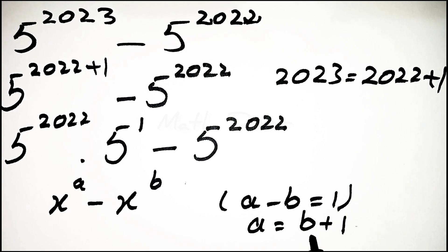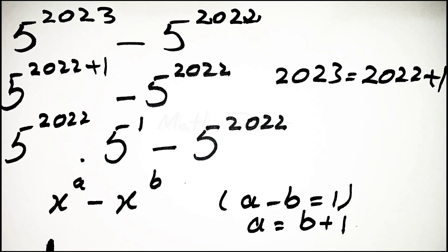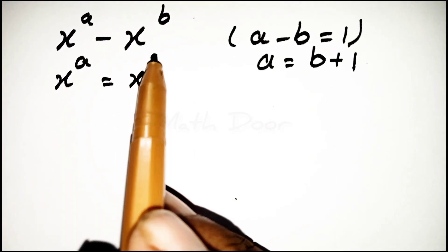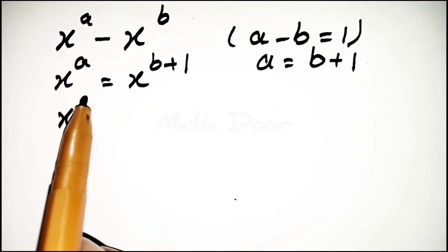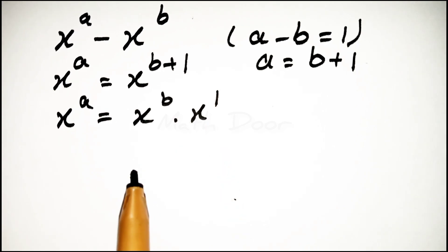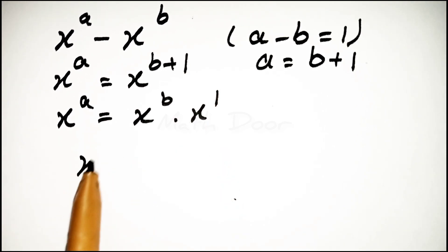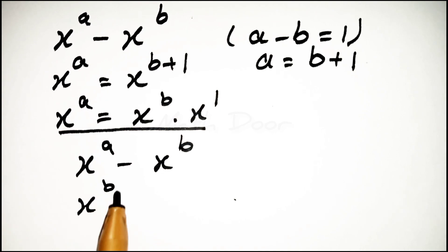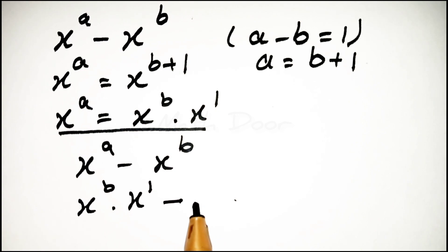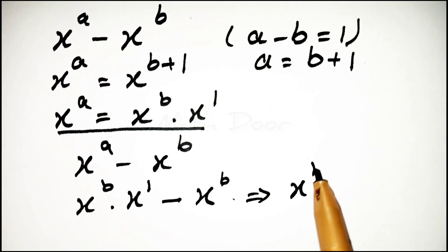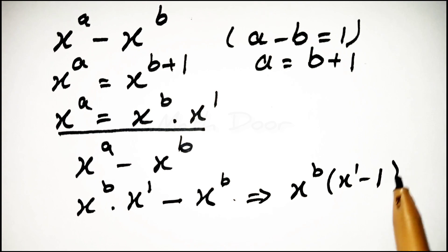Now we write a is equal to b plus 1. So we write x power a is equal to x power b plus 1, which equals x power b dot x power 1. Our expression becomes x power b dot x power 1 minus x power b. We take x power b as a common, giving x power b times (x power 1 minus 1).